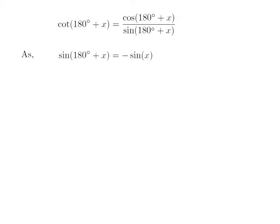We know the trigonometry identity: sine of (180° + x) is equal to minus sine of x. The proof of this trigonometry identity has been explained in the video appearing in the upper right corner, and the URL has also been mentioned in the description section.